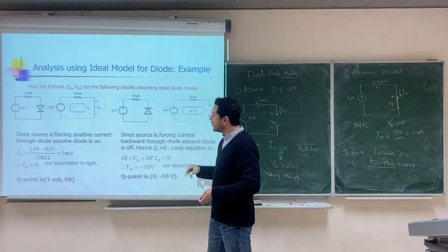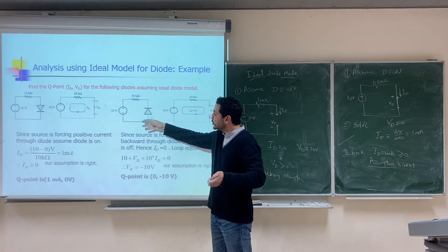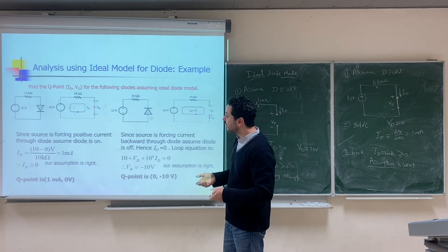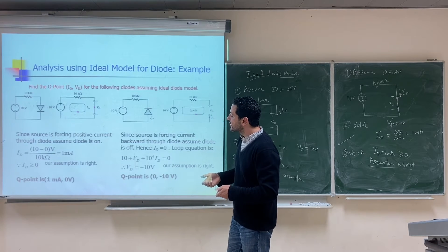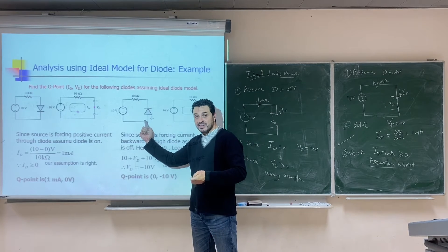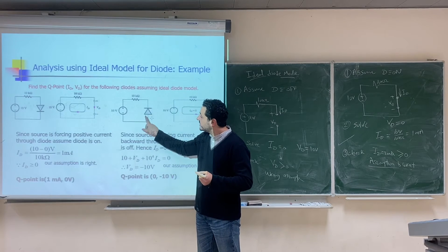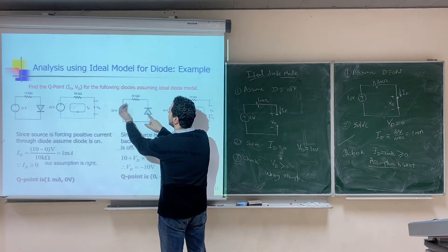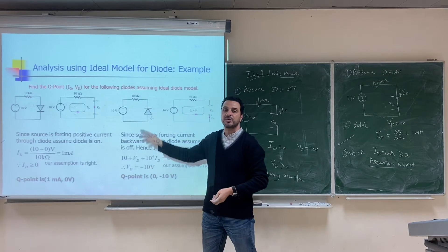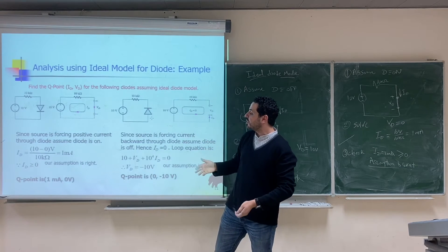I will leave this problem for you to practice: if we reverse the diode, assume the diode is on first and check whether the current is greater than zero. The diode current is defined in the conventional forward direction. You will find that the actual current flows in the opposite direction, making I_D negative — impossible for an on diode — so your assumption will be wrong.